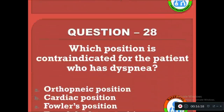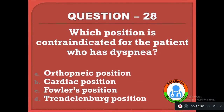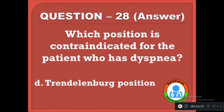Question 29 (labeled 28 in video): Which position is contraindicated for a patient who has dyspnea? Option A: orthopneic position, B: cardiac position, C: Fowler's position, D: Trendelenburg position. The correct answer is D, Trendelenburg position is not given to a patient who is having breathing difficulty.